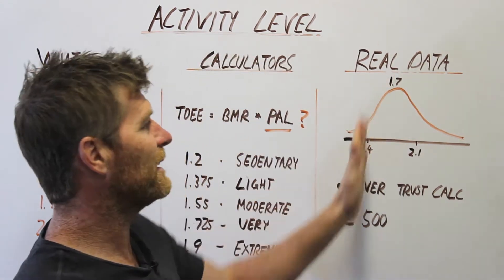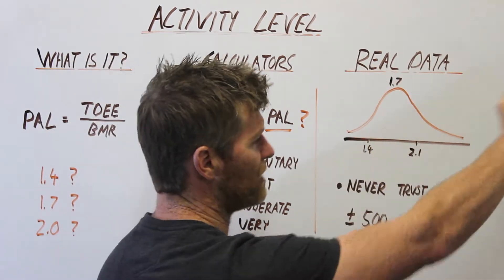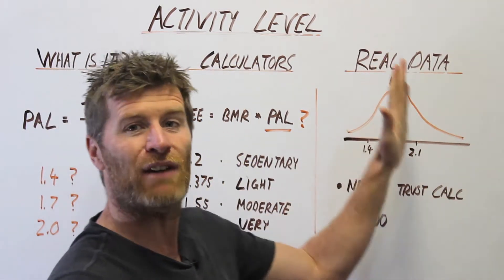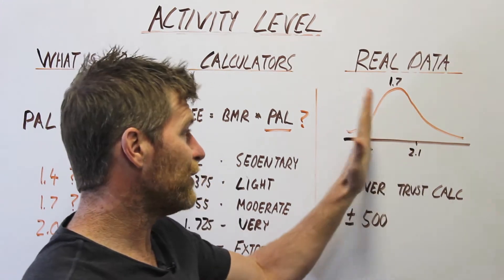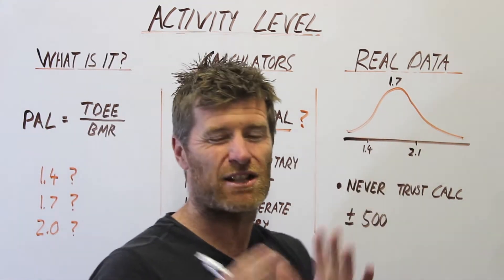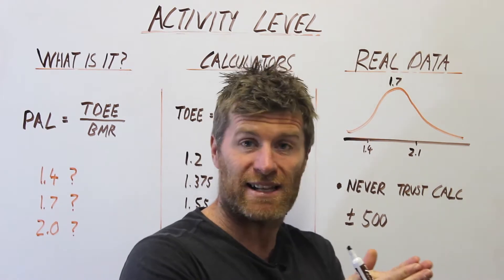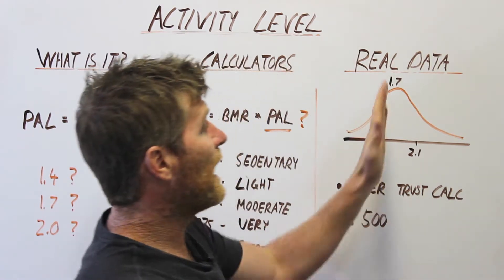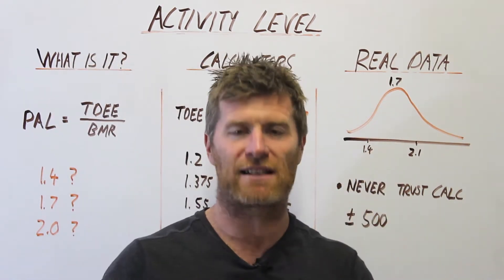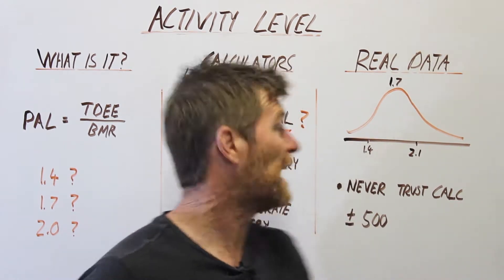What we see is typically a bell-shaped distribution with a bit of a positive skew. The mid-range is about 1.7. If you're below 1.4, you're probably in the bottom 10–15% of activity level. And if you're above 2.1, you are very active — in the top 10–15% of activity.